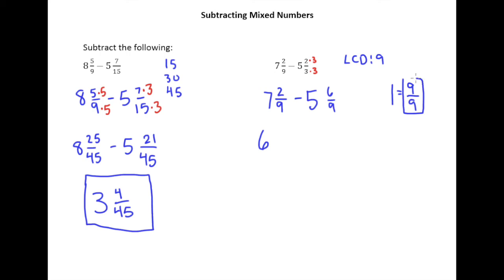So that 1 that we borrowed becomes 9 ninths. In the earlier video where this happened, since there was no fraction part we just threw 9 ninths next to the 6. However we already have 2 ninths sitting there, so what we're going to be doing is we're going to be adding these two fractions. So 2 ninths plus 9 ninths is going to give us 11 ninths. So we borrowed 1 from the 7, turned that 1 whole into 9 ninths and added it to this fraction here.